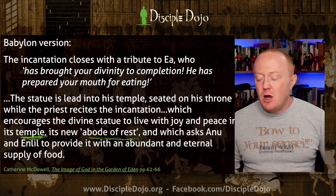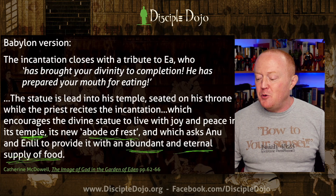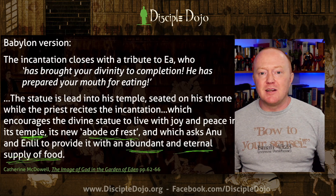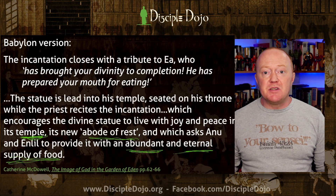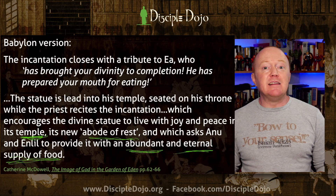This is an important concept: the temple in the garden is seen as the place of rest for the deity, where the deity can have an abundant and eternal supply of food. If you're familiar with scripture, you should start to hear resonances with the Genesis account. For the Babylonians, this was the background to their idolatry — they believed they were providing the gods with rest and food, keeping the gods happy, and in return the gods would provide for them.